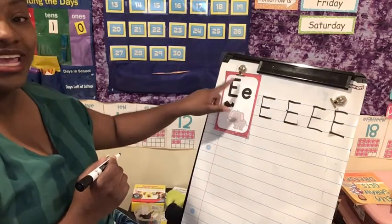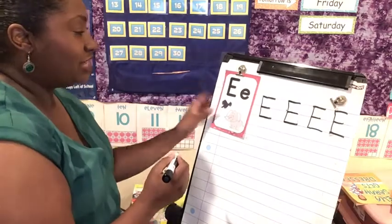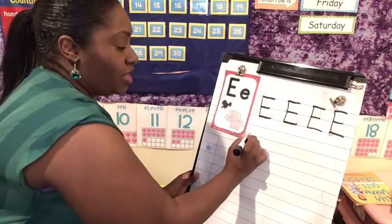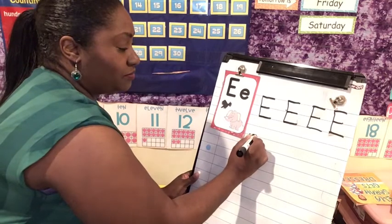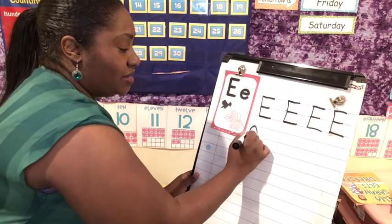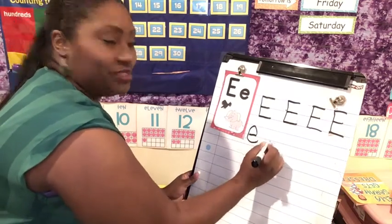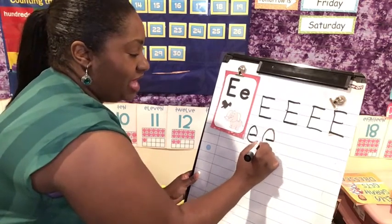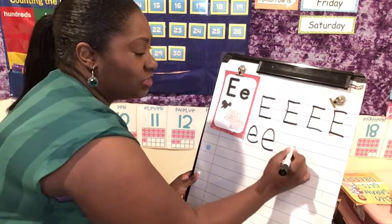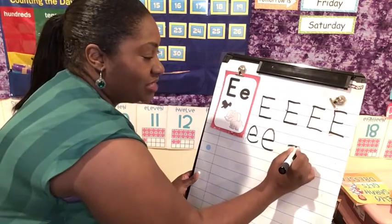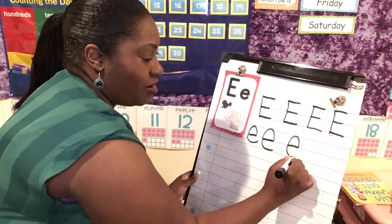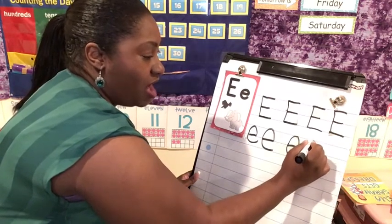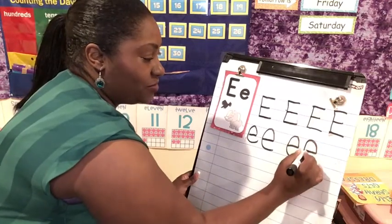And now, let's draw the lowercase e. A line across and around and around. Whoo, that went fast, right? Across and up and around. It's okay, we're just learning. Across, up and around. That's our lowercase letter e.